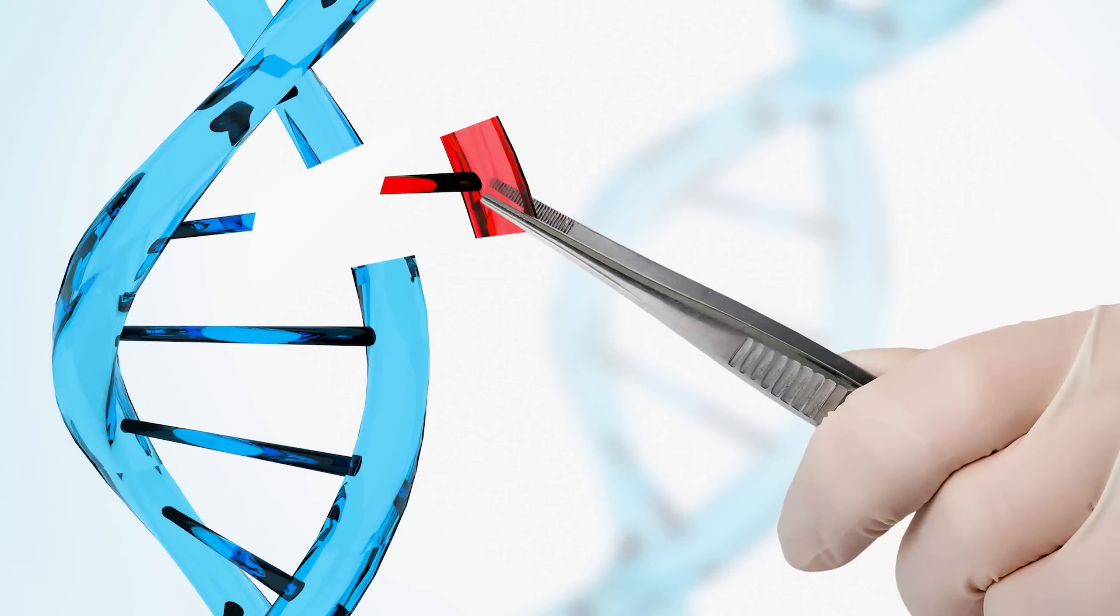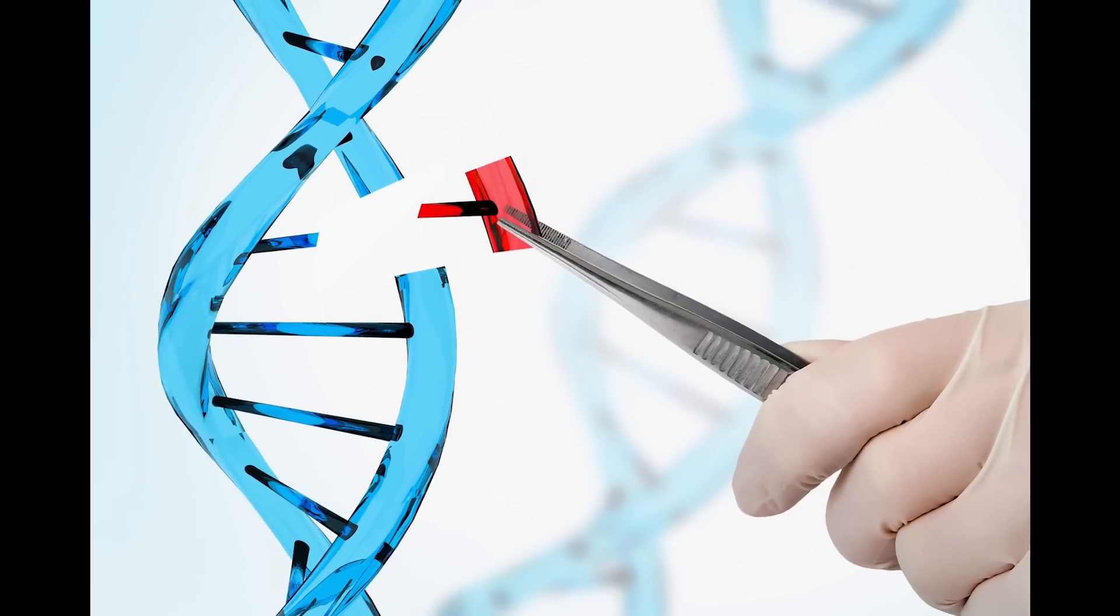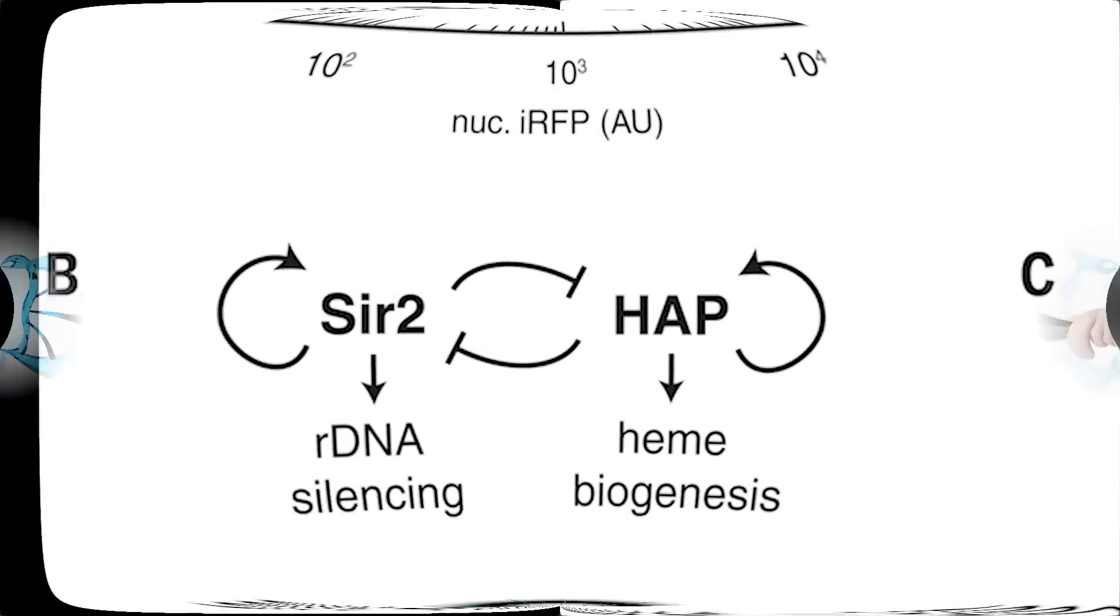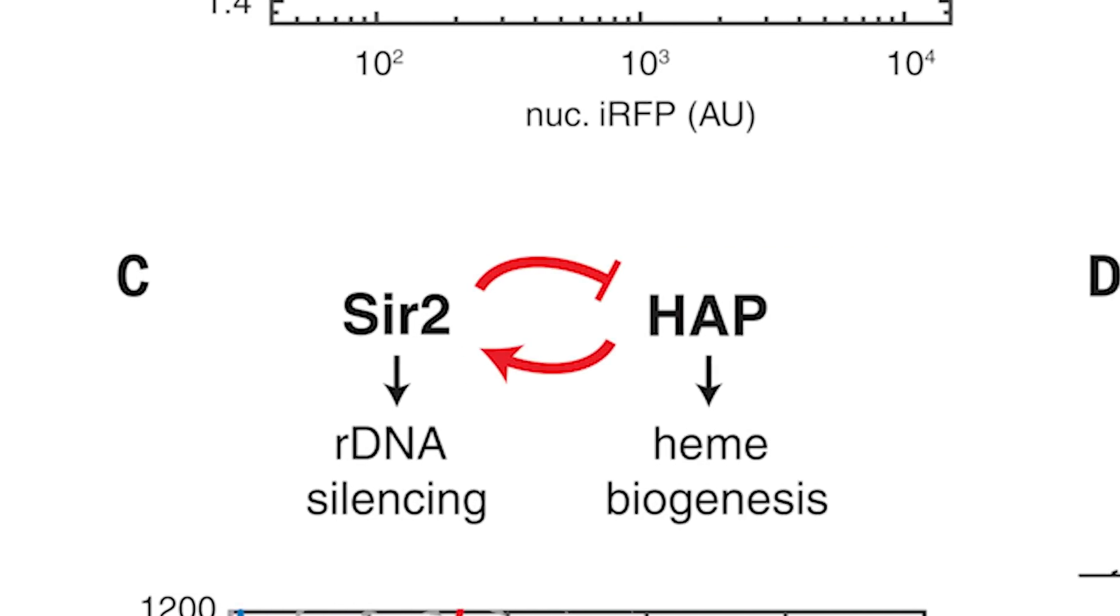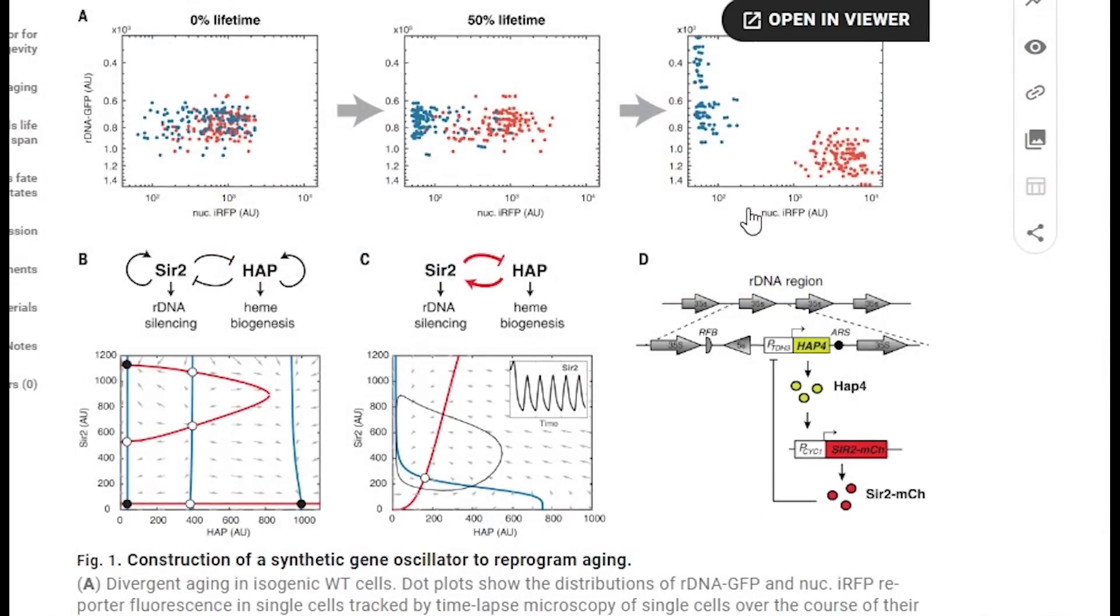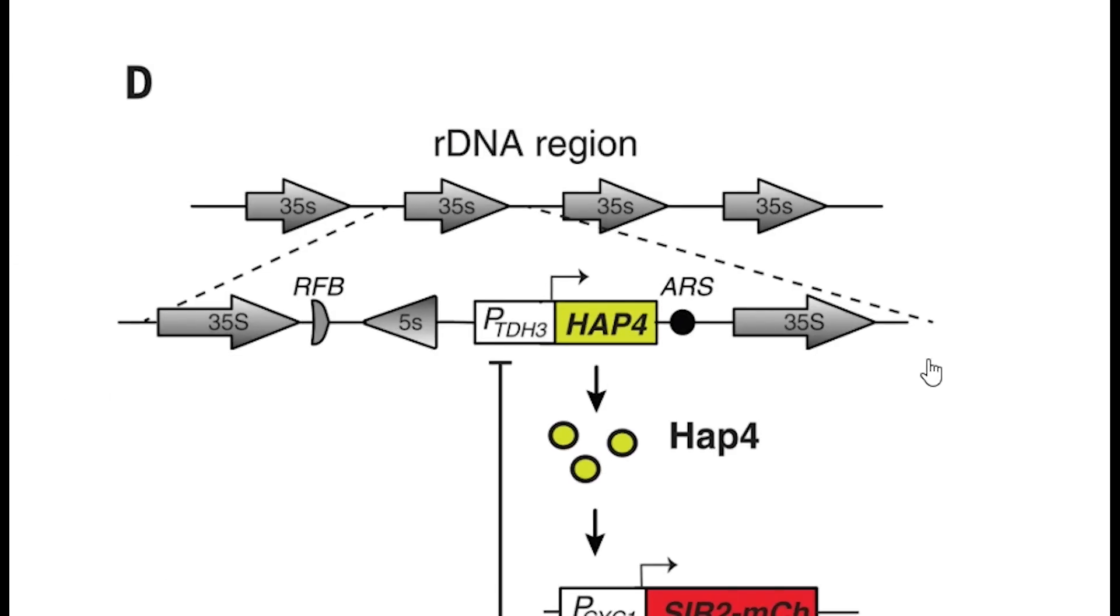Well we turn to genetic engineering. To turn HAP from an inhibitor to an activator of SIR2, they had to edit the promoter region, the region of DNA that regulates the activity of SIR2, to include one that is bound and activated by HAP.